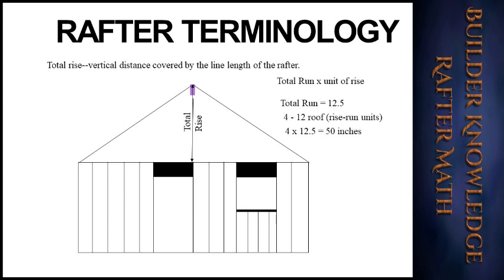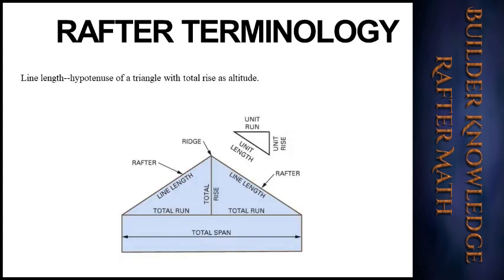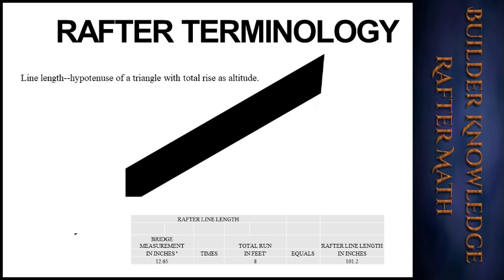Next is the line length, also known as the rafter line length — the hypotenuse of the triangle. We take our bridge measurement times our total run in feet. In the example, a bridge measurement of 12.65 inches times a total run of 8 feet gives us a line length of 101.2 inches. This covers the line length from tip to the end of the seat cut on a rafter.